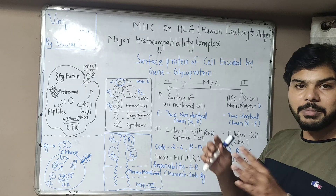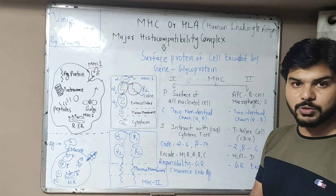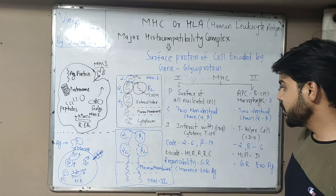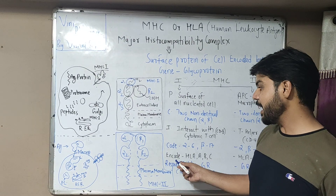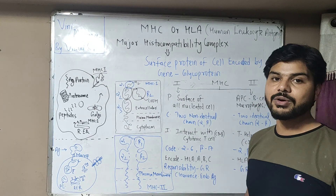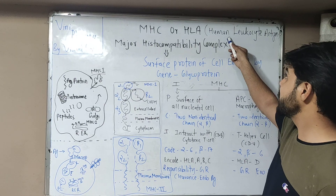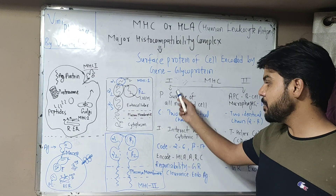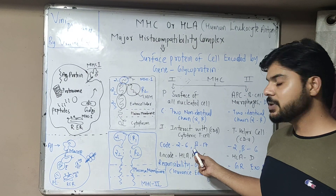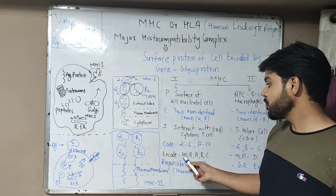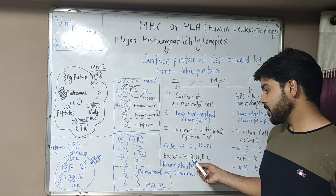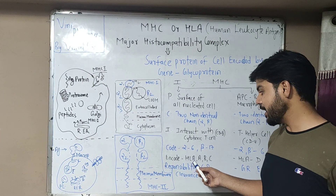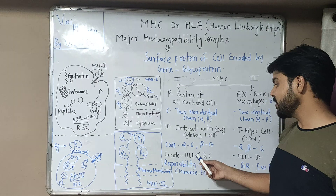The MHC genes are coded on chromosome 6. For MHC Class 1, the alpha chain and beta chain are encoded by Human Leukocyte Antigen genes HLA-A, HLA-B, and HLA-C.